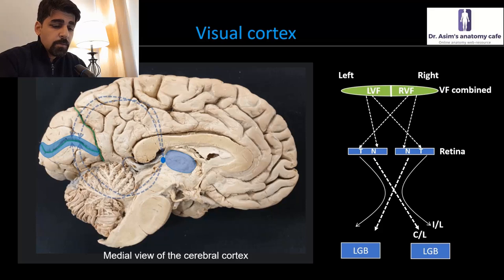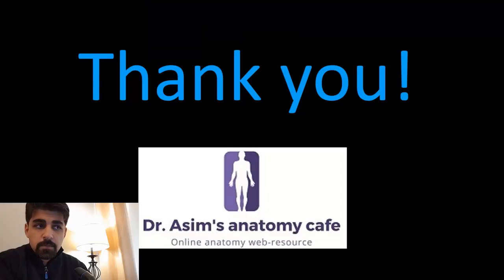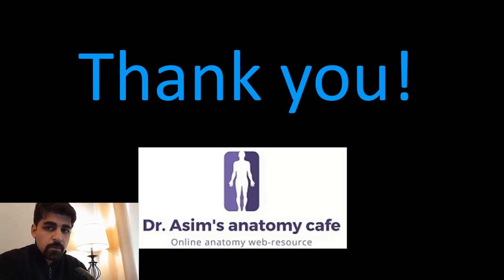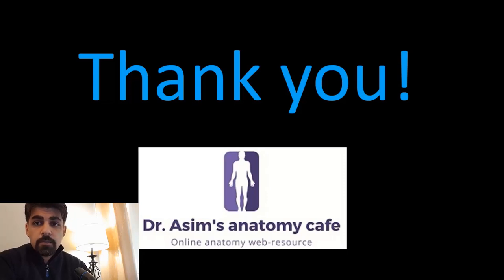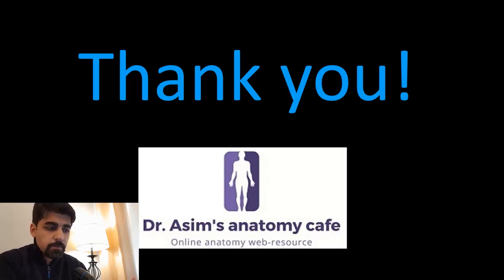So just to summarize what we've covered in this video podcast: we talked about the extent of the occipital lobe, then the functioning of the primary visual area, and we elaborated on the visual pathways to contextualize the functioning of the primary visual area. We then saw how information is perceived in a hierarchical fashion in the secondary visual area and then into the higher-order tertiary association areas. See you next time with another interesting video podcast on another topic in anatomy. Thank you very much.